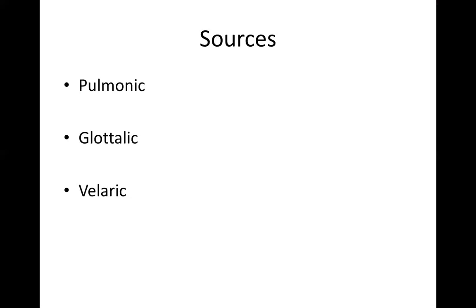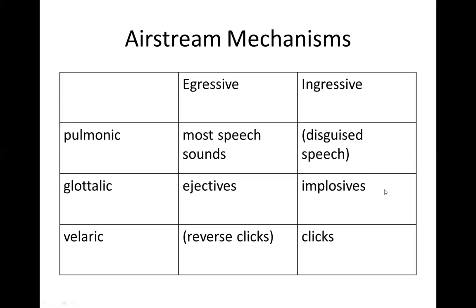Velaric sounds are what you do when you make that clicking sound — the kind you might use with animals or to say 'come over here, horse.' When you combine the direction of airflow — ingressive or egressive — with those different sources: pulmonic, glottalic, and velaric, you get these different possibilities. Most speech sounds are right here, from air coming from the lungs going out.